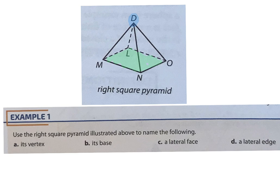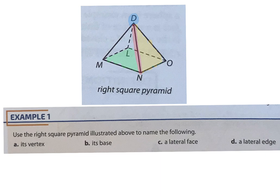The lateral face is the face going up to the vertex (for a pyramid) or up to the other base (for a prism). For a pyramid, the lateral face will always be a triangle because it goes from a side up to a point. For a prism, the lateral face will always be a rectangle — going from one side to a parallel side. The lateral edge is where two lateral faces meet; it is a line segment for both pyramids and prisms.